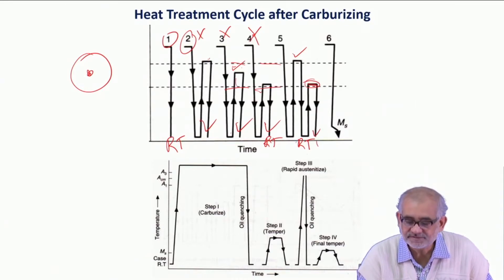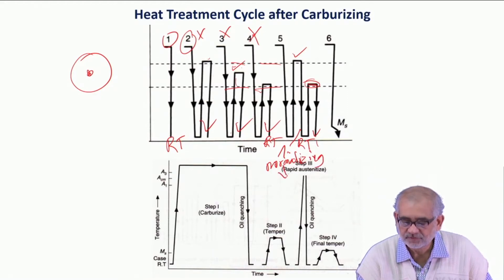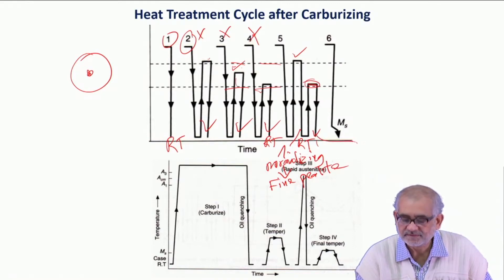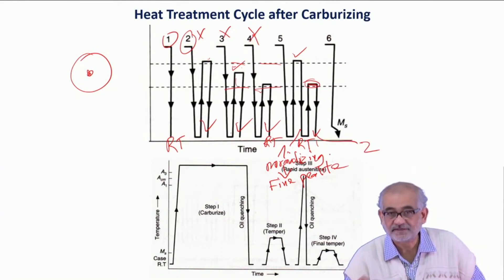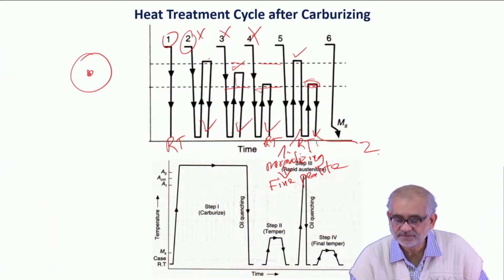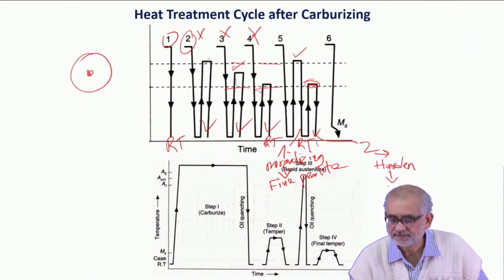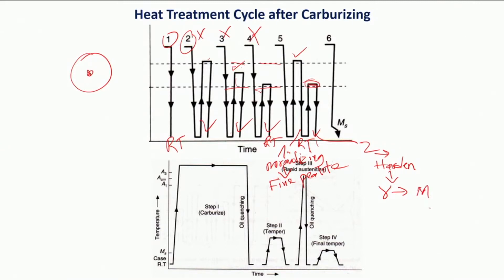So in the first leg, which is meant for normalizing, what we get is fine pearlite. In the second leg, when we heat from above AC1 and not above AC3, what we do is harden, and by hardening we convert austenite into martensite.